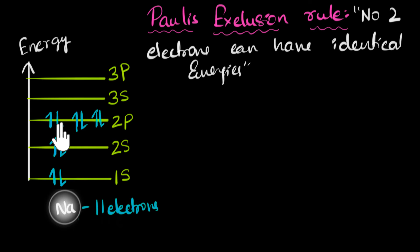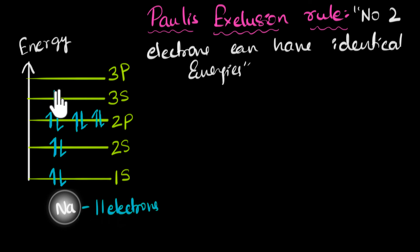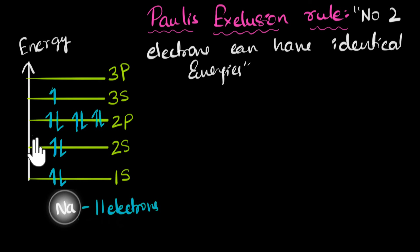There are no more orbitals available in 2p. So counting down through 1, 2, 3... 10 electrons placed, the last — the 11th electron — ends up in the 3s level with upspin. But this is for a single atom of sodium.